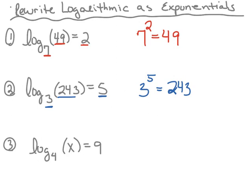Number three, we have log base four of x equals nine. We're going to rewrite this as an exponential. The first thing we need is the base, which is four. That needs an exponent — the exponent is nine — and it equals the argument, which is x. Therefore we end up with the exponential four to the ninth power equals x.